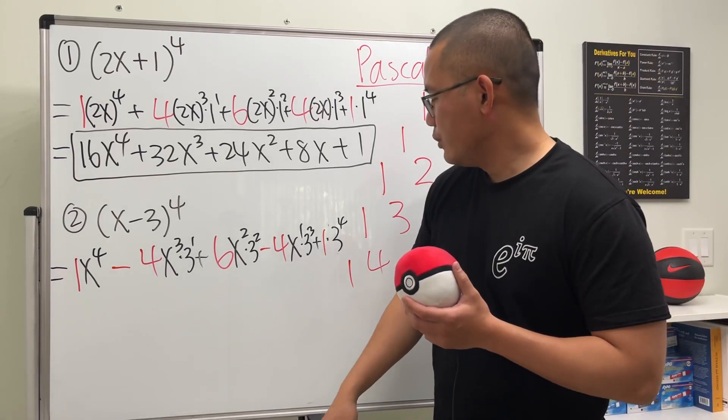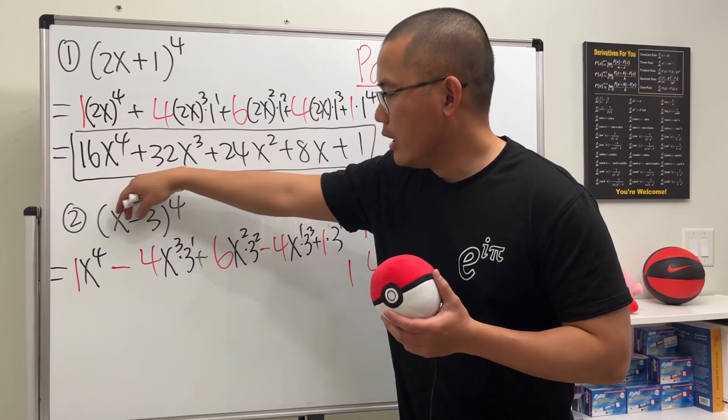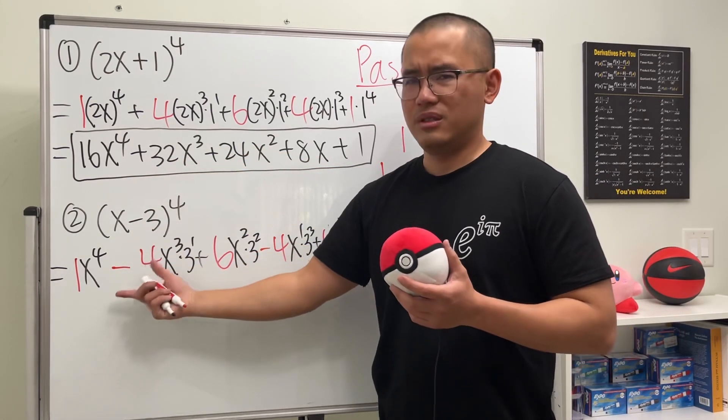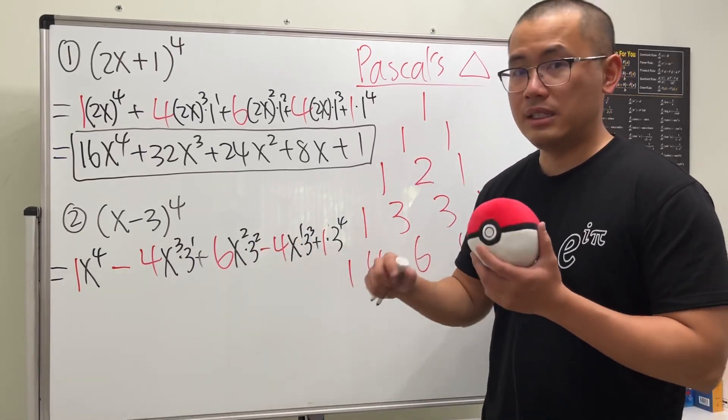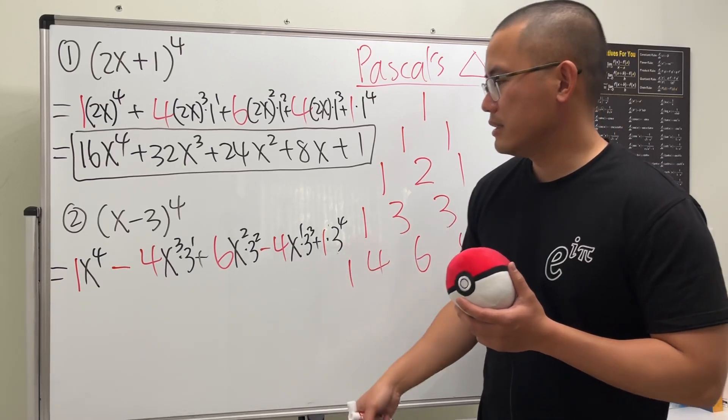The reason is because if you look at negative 3. If you take this as the second term. If you put it in here. Raise that to the first power. That's why you have the negative. But if you remember it as it alternates, much better.